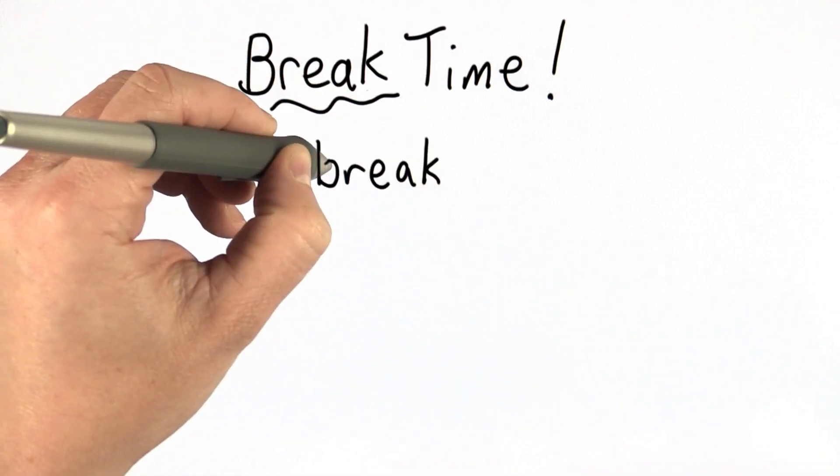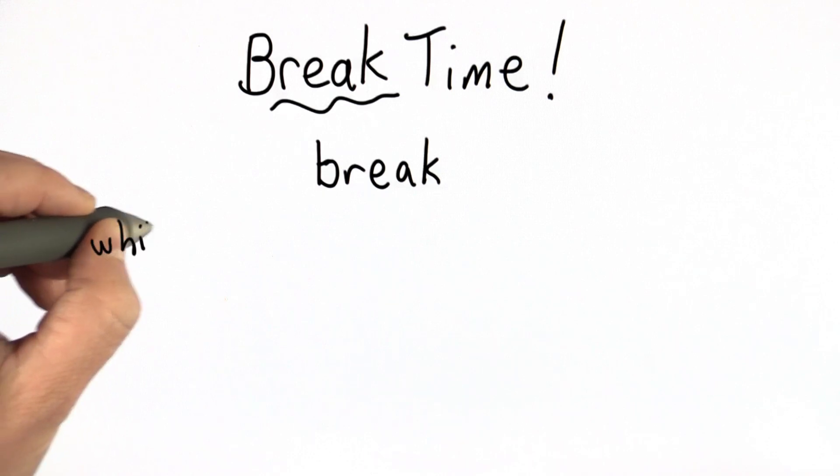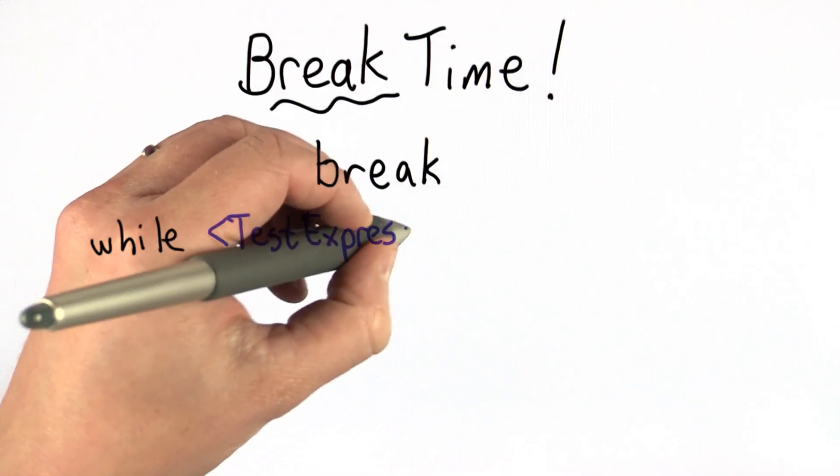Break gives us a way to stop the loop even while the test condition is true. So here's the typical structure of a loop with a break. We have the while as we did before, we have the test expression, and we had a colon.